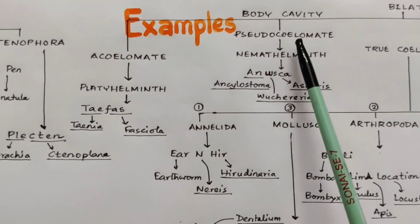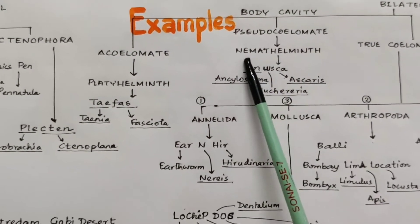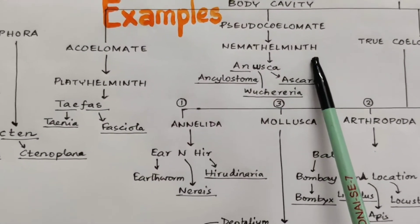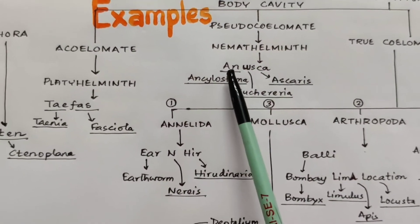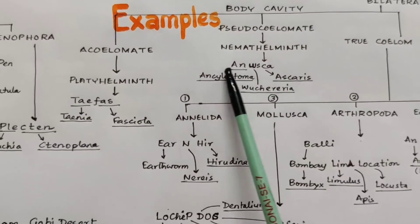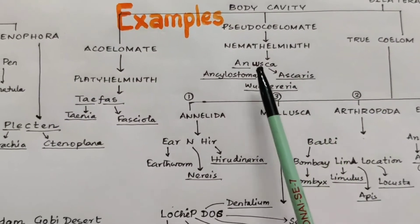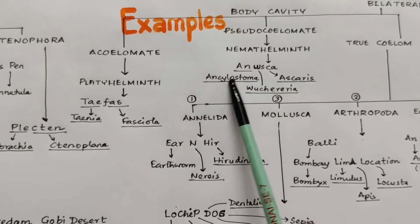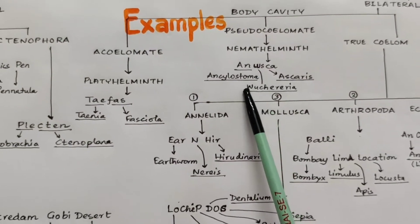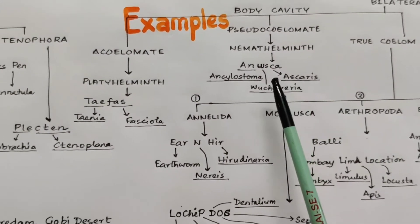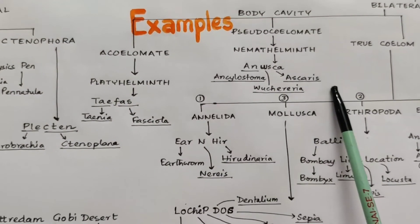In case of Pseudocoelomates, we have only one phylum — Nemathelminthes or Aschelminthes. You have to remember 'Anushka.' 'An' for Ankylostoma, 'W' for Wuchereria, and 'Aska' for Ascaris.